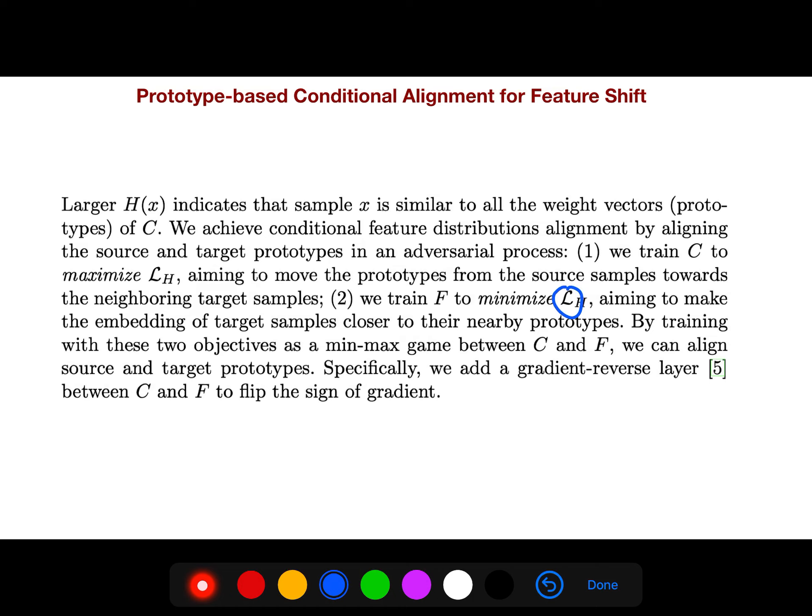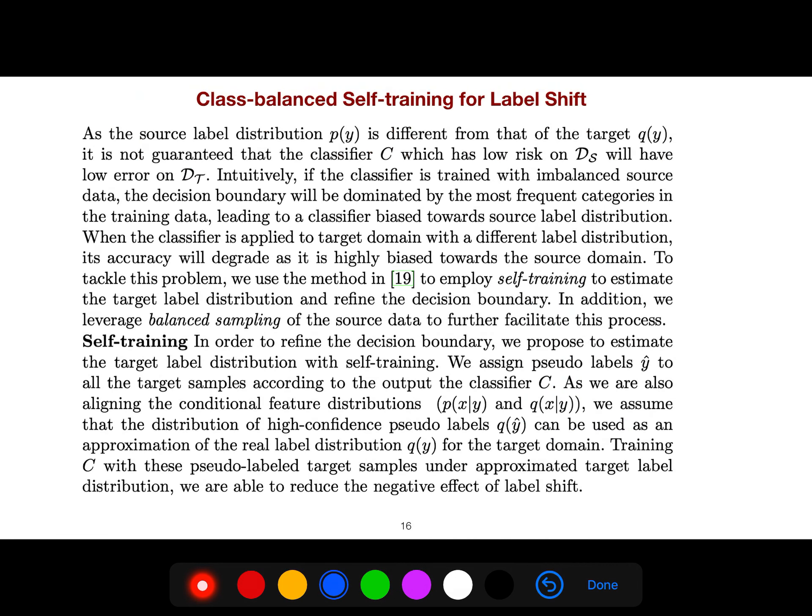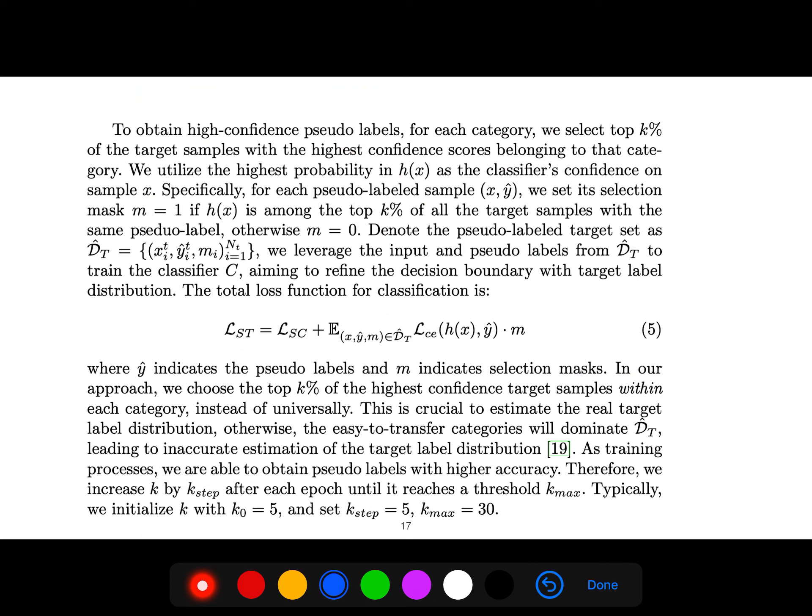So it's a minimax game between C and F. So the total loss can be written like this, and W hat is just the pseudo labels, and M here is just selection mask.